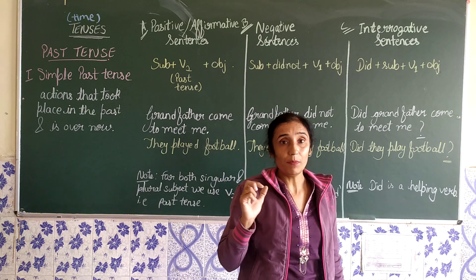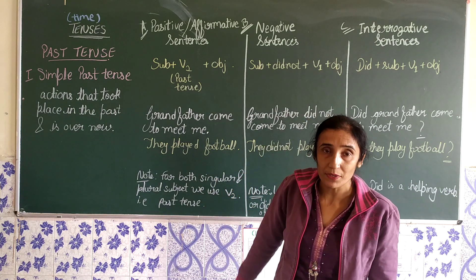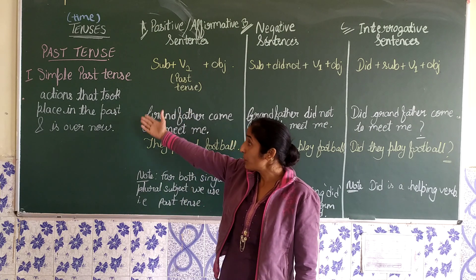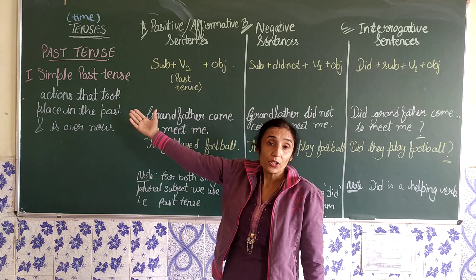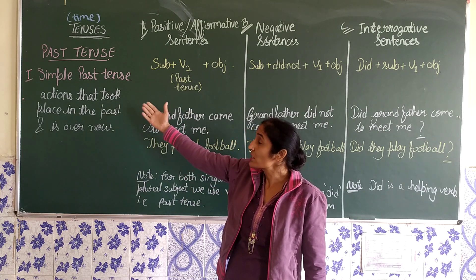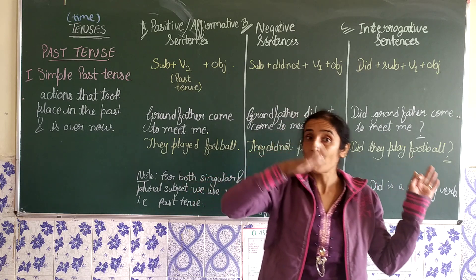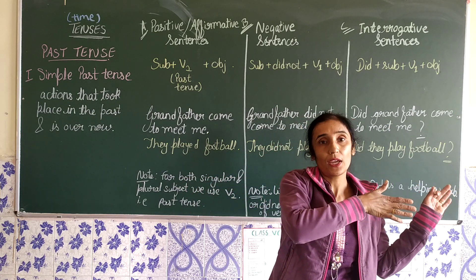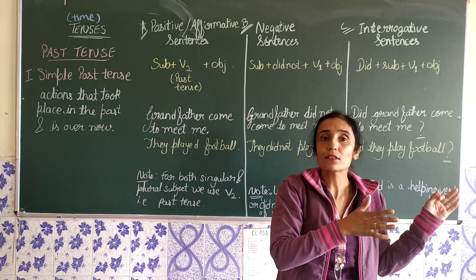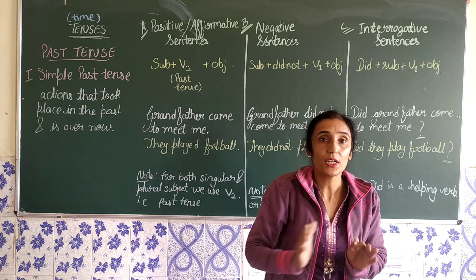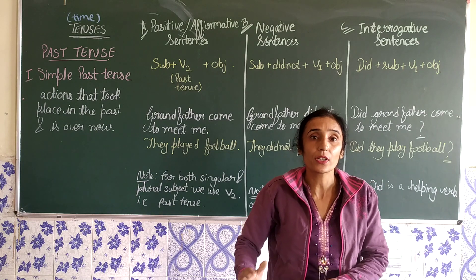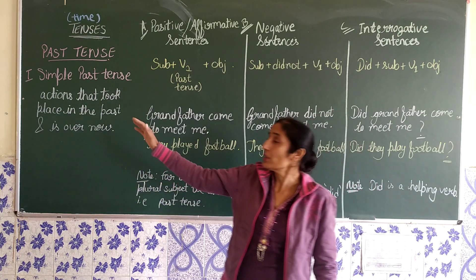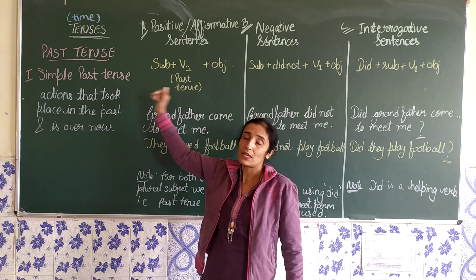What is simple past tense? When we are talking about simple past tense, it means we are talking about an action that took place in the past and it is over now. That action has already finished. That comes under the heading of simple past tense.